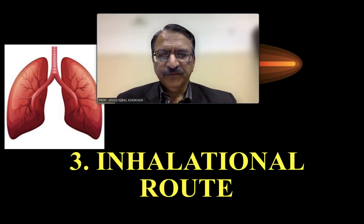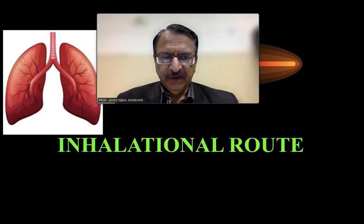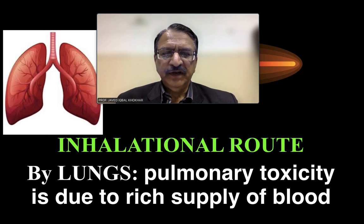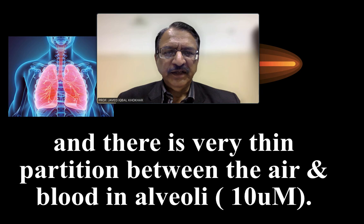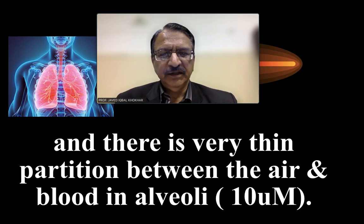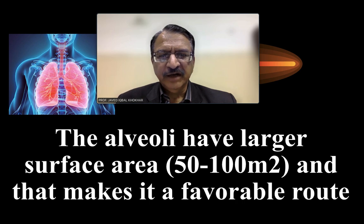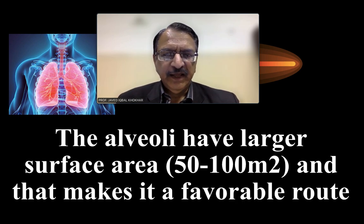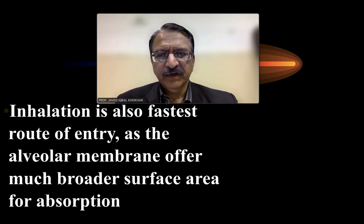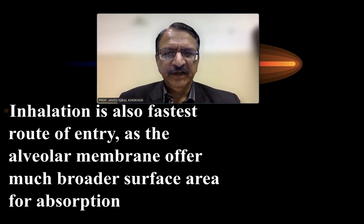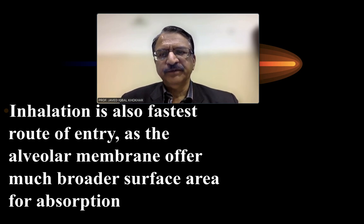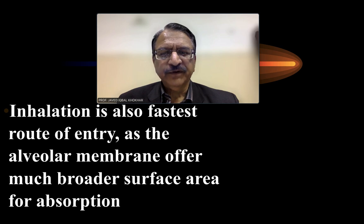Then the inhalation route, when drugs are inhaled. The absorption is by the lungs and the pulmonary toxicity is due to the rich blood supply of the lungs. There is a very thin partition between the air and the blood in alveoli — 10 micrometers, which is very thin. The alveoli have a large surface area of 50 to 100 meters square, making it a favorable route. So inhalation is also a fastest route of entry for drugs and chemicals, which get absorbed from the mucous membrane, as the alveolar membrane offers a much broader surface area for absorption.